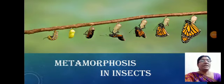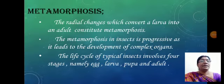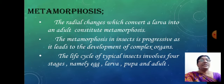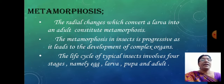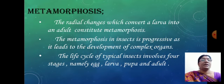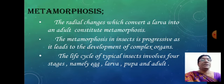Metamorphosis in insects. The radical changes that convert the larva into an adult is called metamorphosis. Metamorphosis in insects is a progressive development of complex organs.